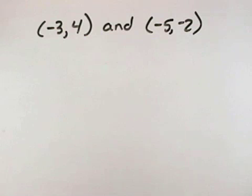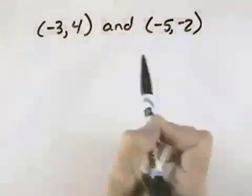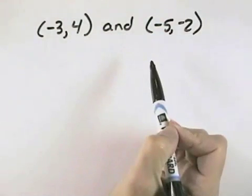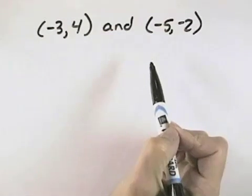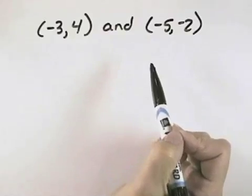In this exercise, calculate the slope of the line passing through these given points. If the slope is undefined, so state, and then we'll indicate whether the line rises, falls, is horizontal, or vertical.